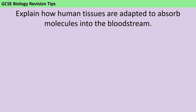I would usually recommend that you find the 6 mark question quite early in the exam so that you can just jot down a few ideas. As you're answering the rest of the paper, you can have the question ticking over in the back of your head and keep flicking back and adding things into your plan, so that by the time you're ready to write it, you've got a good structure to base it off.